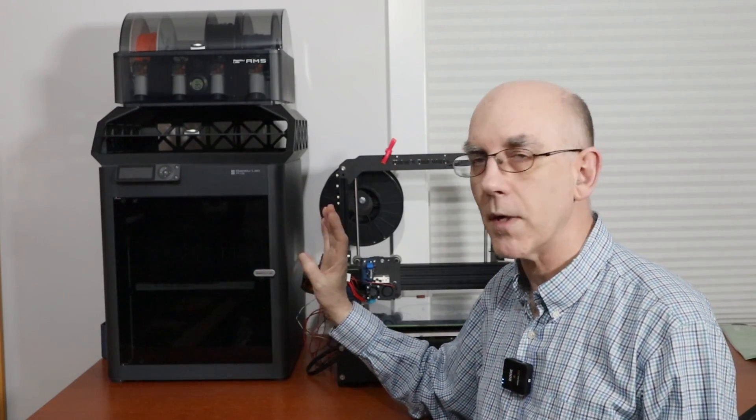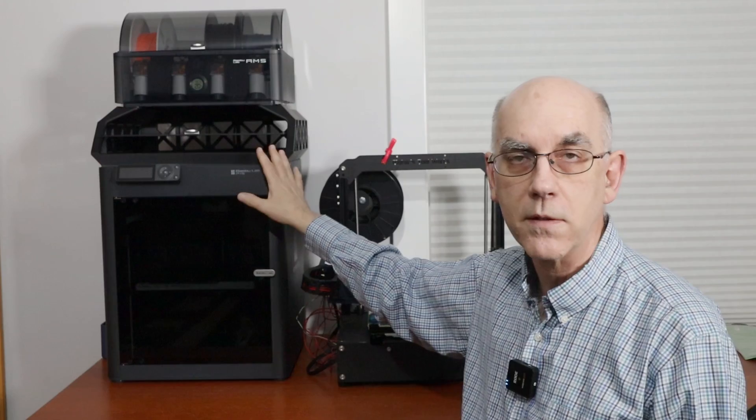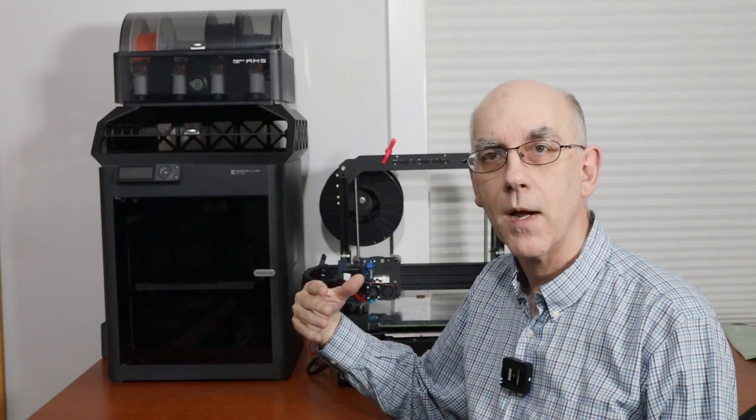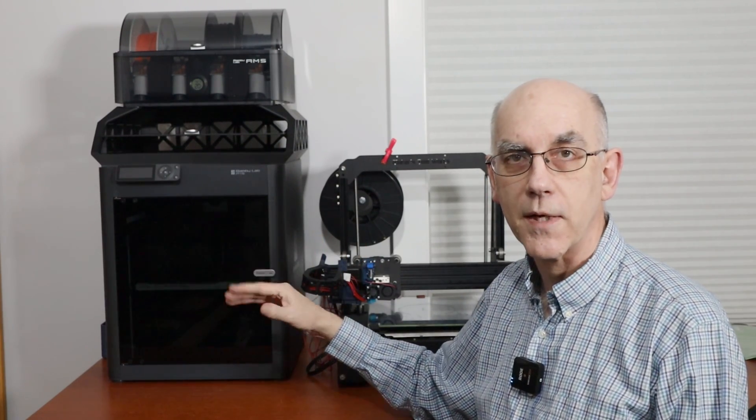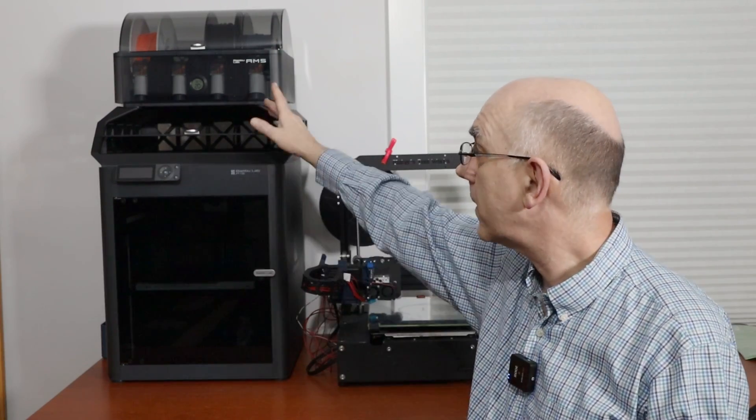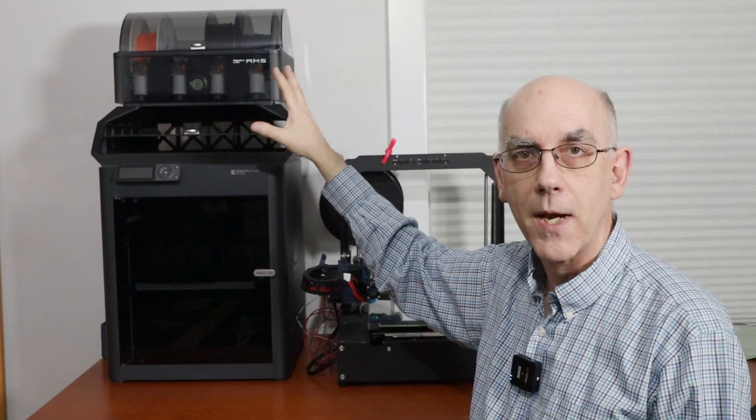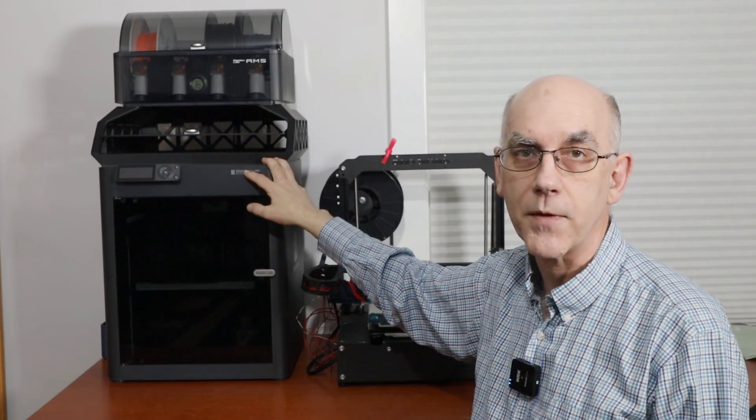When I was doing my research, I discovered the P1S has pretty much all the capabilities that I want that the Carbon X1 has but at a lower price. So I decided to go with this machine, and that meant the AMS or the Automatic Material System became more affordable because the price of this was lower.